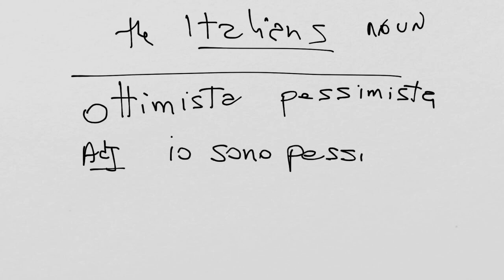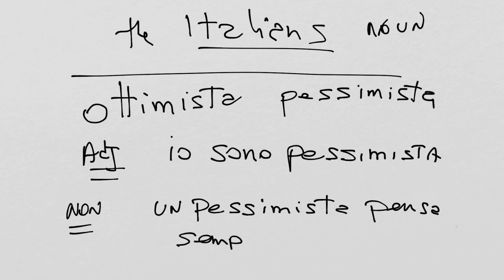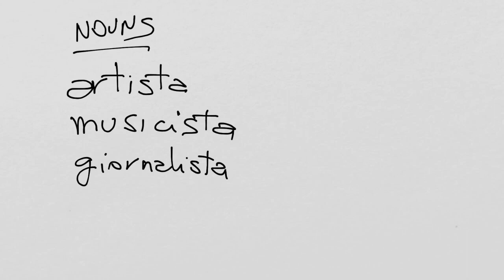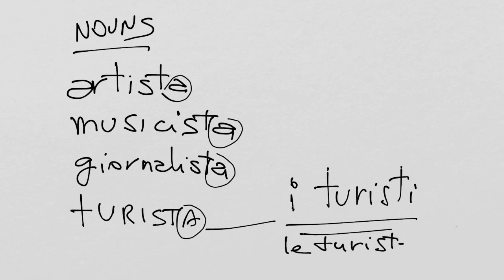As in the case: io sono pessimista — I am a pessimist. Un pessimista pensa sempre al peggio — a pessimist always thinks of the worst. Now let's look at some of the most common nouns that end with -ista: artista, musicista, giornalista, and turista. Plurale: i turisti. Femminile plurale: le turiste.